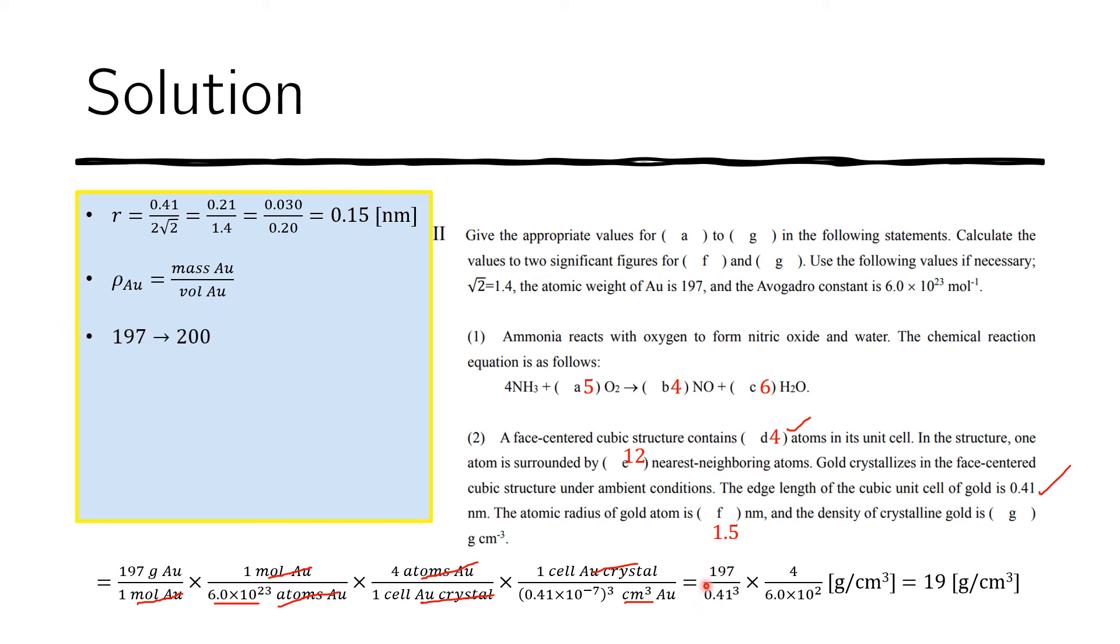Next is I deal with 0.41 cubed. First, I do 0.41 times 0.41 and I get 0.1681. Then again, I round this to two significant figures to become 0.17.